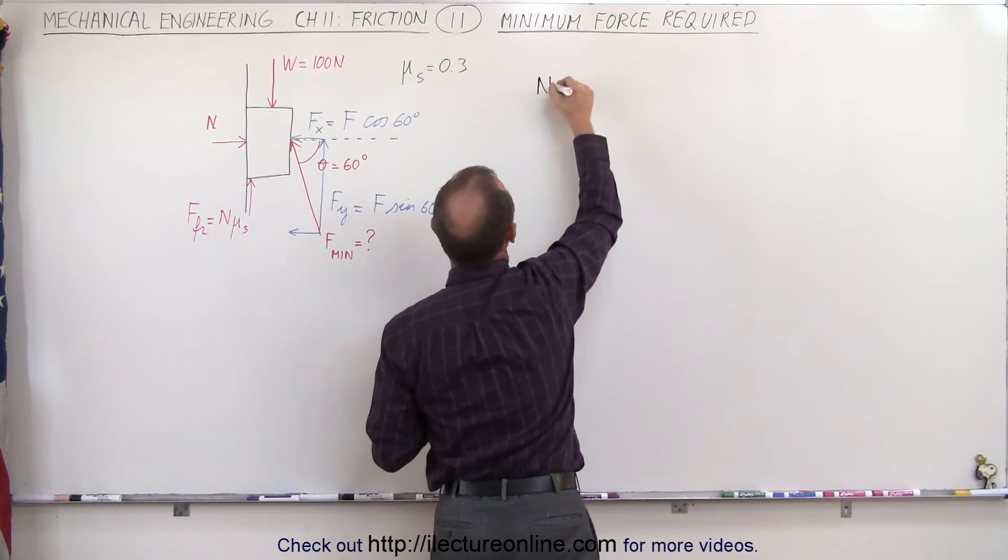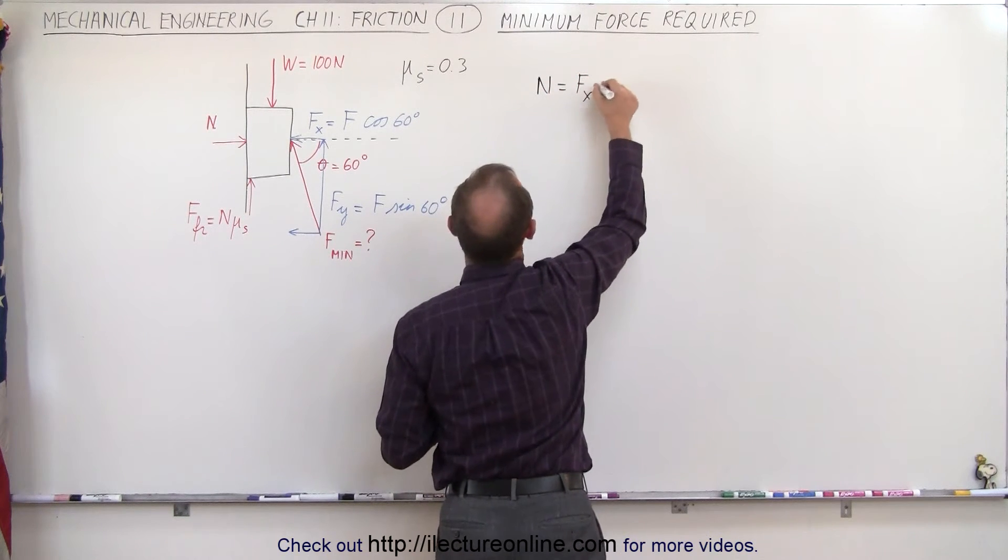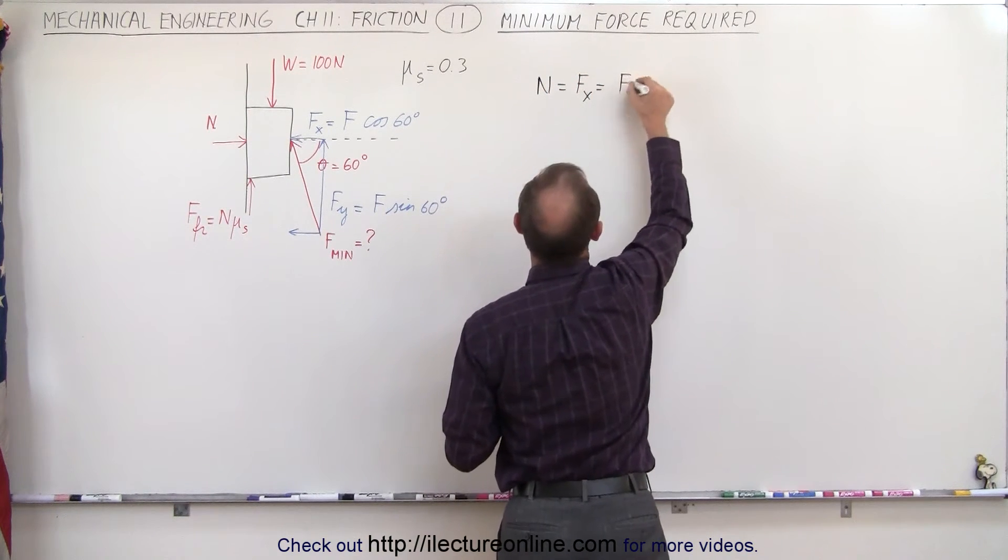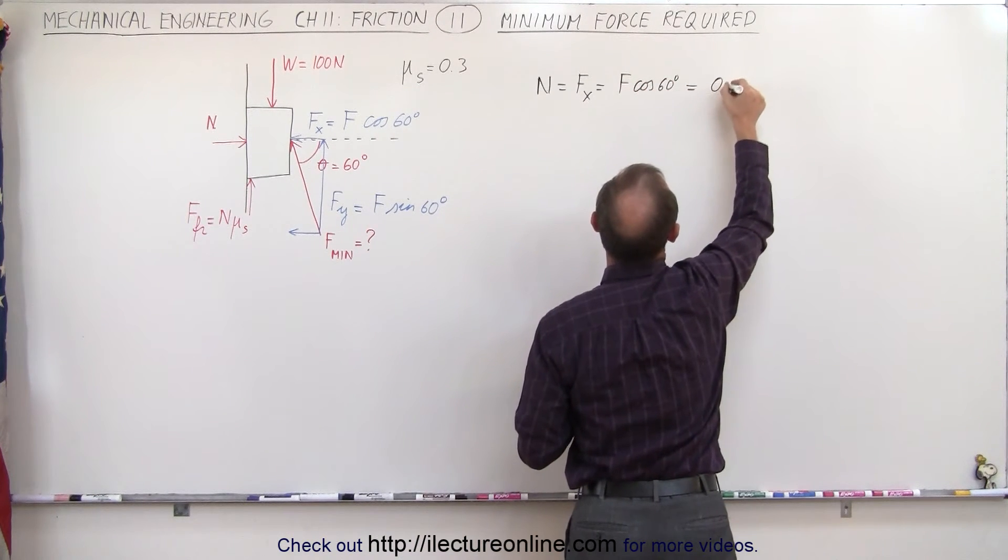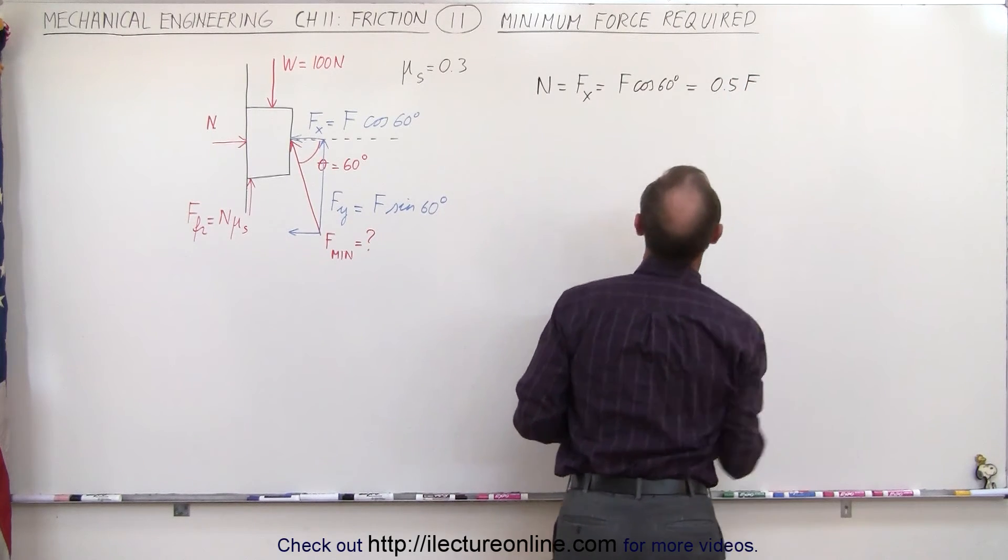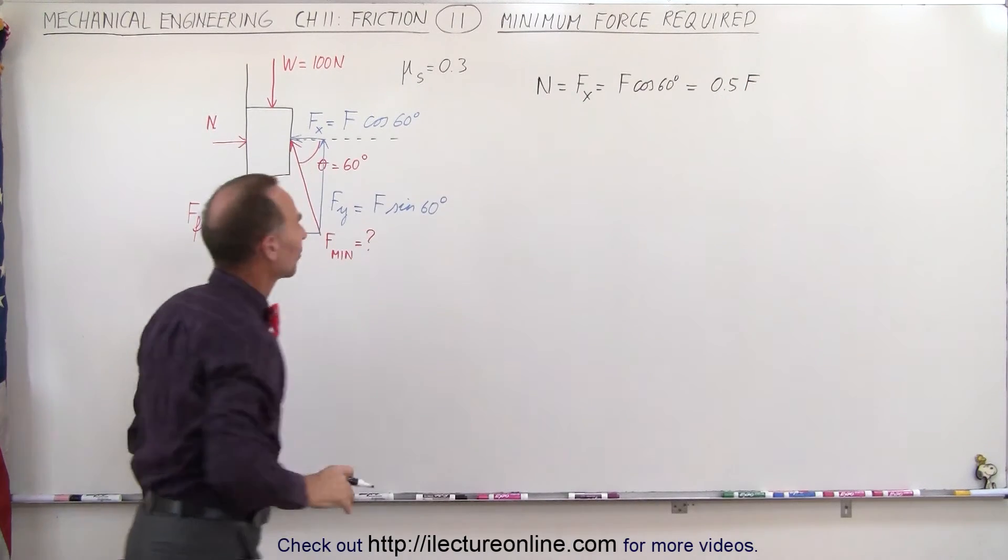The normal force will be equal to F sub x, which is equal to F times the cosine of 60 degrees, which is one half. Therefore that's equal to 0.5 times the minimum force required.